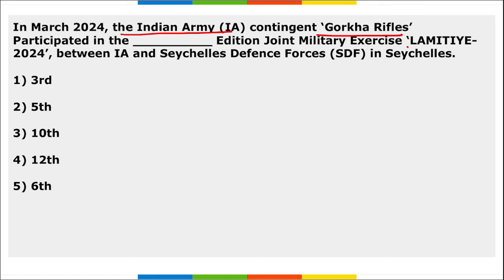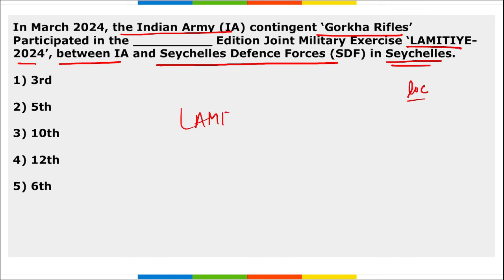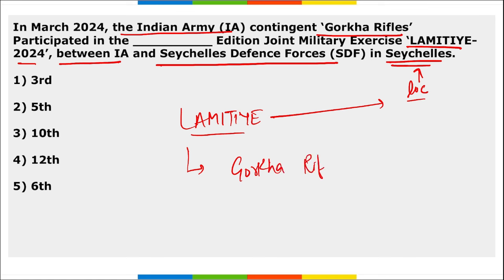The Indian Army contingent from Gorkha Rifles participated in the 10th edition of the joint military exercise Lamitye, held between the Indian Army and the Seychelles Defence Force in Seychelles. 'Lamitye' means friendship.